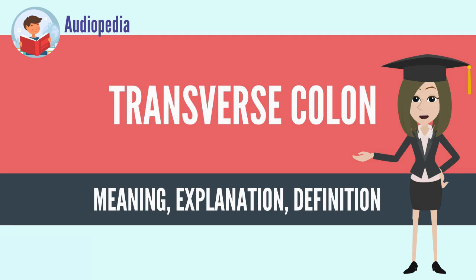Toward its splenic end there is often an abrupt U-shaped curve which may descend lower than the main curve. It is almost completely invested by peritoneum, and is connected to the inferior border of the pancreas by a large and wide duplicature of that membrane, the transverse mesocolon.